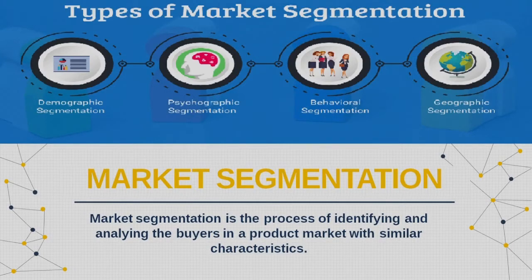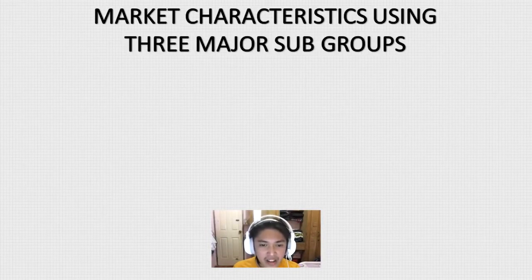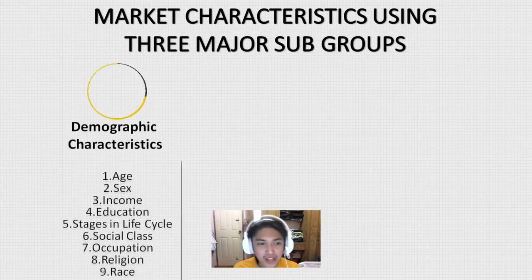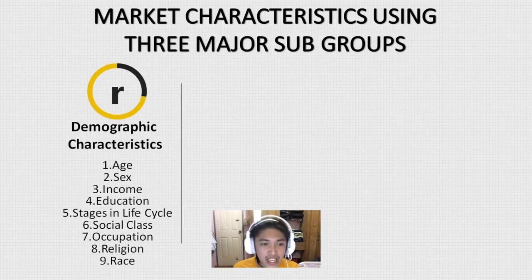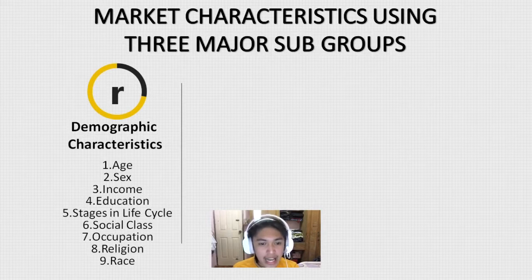Segmentation allows matching your products or services with buyers' requirements. If you want to examine the differences among the buyers and categorize them into subgroups of the total market, you can break down your market characteristics using three major subgroups. The first is demographic characteristics: age, sex, income, education, ages in life cycle, social class, occupation, religion, and race. For example, demographic information that you acquired showed that your customers will likely be female from a middle class family, ages between 20 and 25.